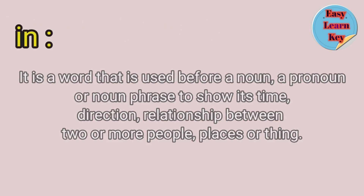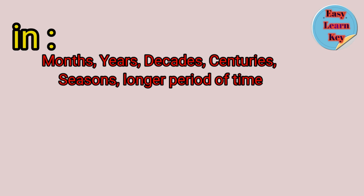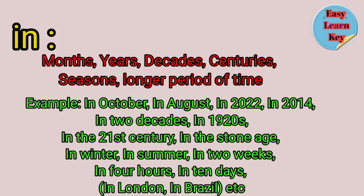Starting with 'in' — it is used for months, years, decades, centuries, seasons, and longer periods of time. For example: in October, in 2022, in the 1920s, in the Stone Age, in winter, in summer, in 10 days. It is also used for places like in London, in Brazil, etc.